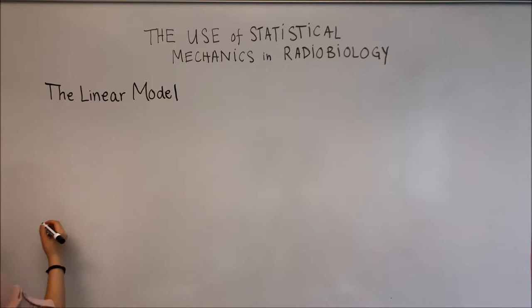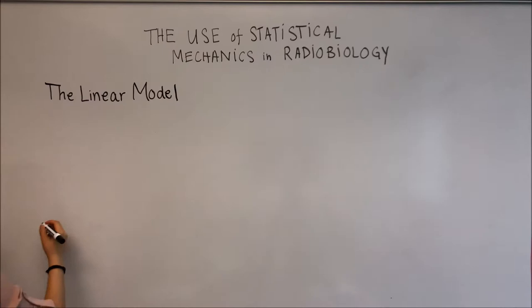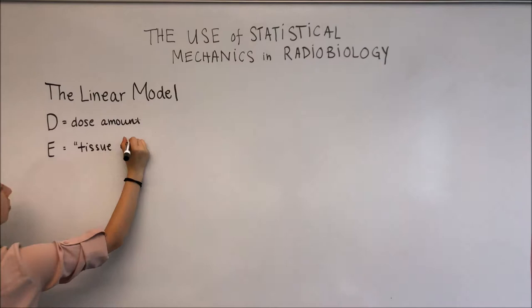The tissue effect E is defined in the linear model as alpha d, where alpha is the proportionality constant that characterizes the particular tissue.